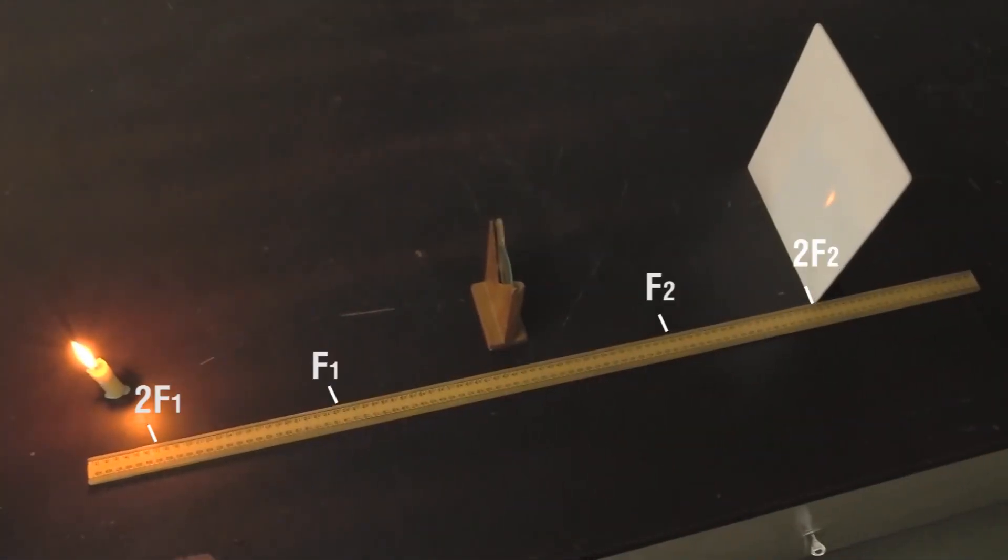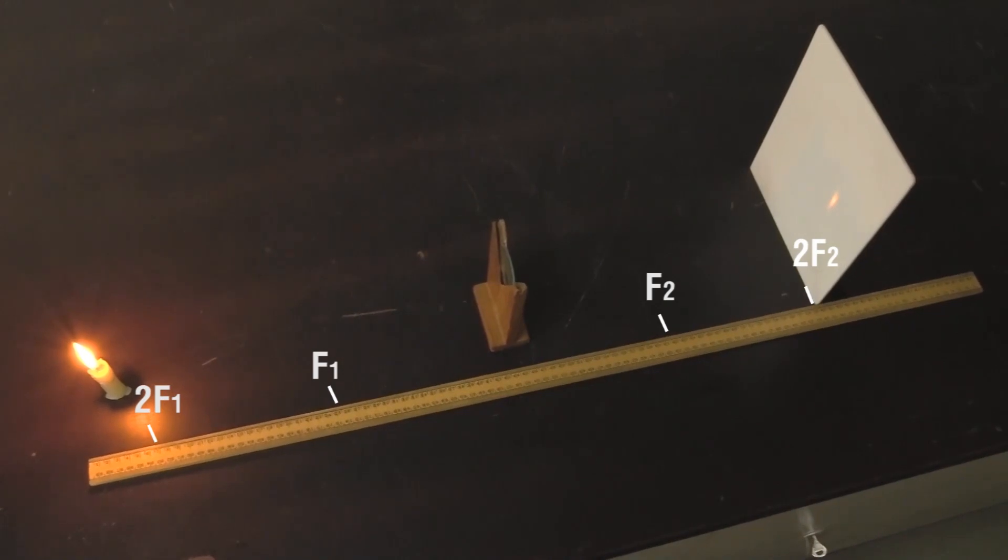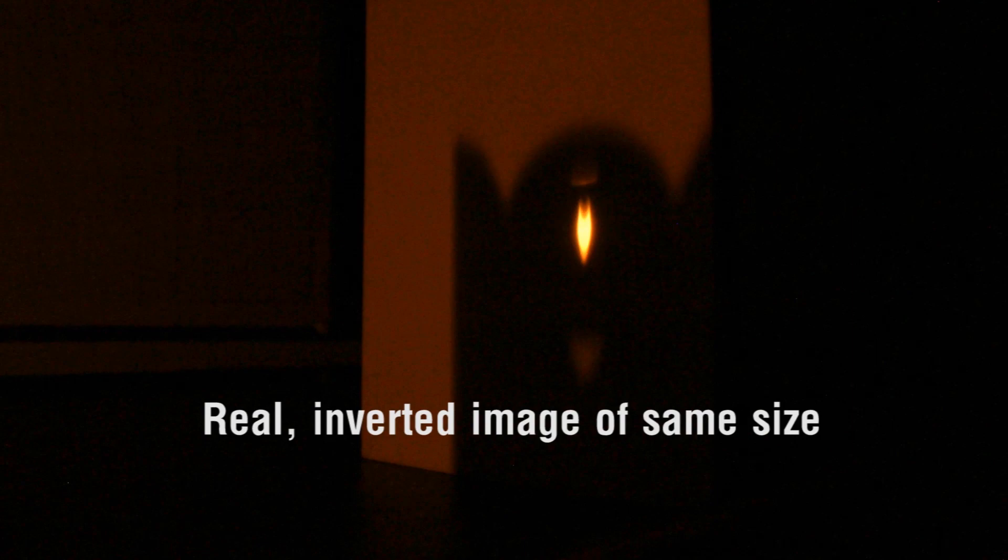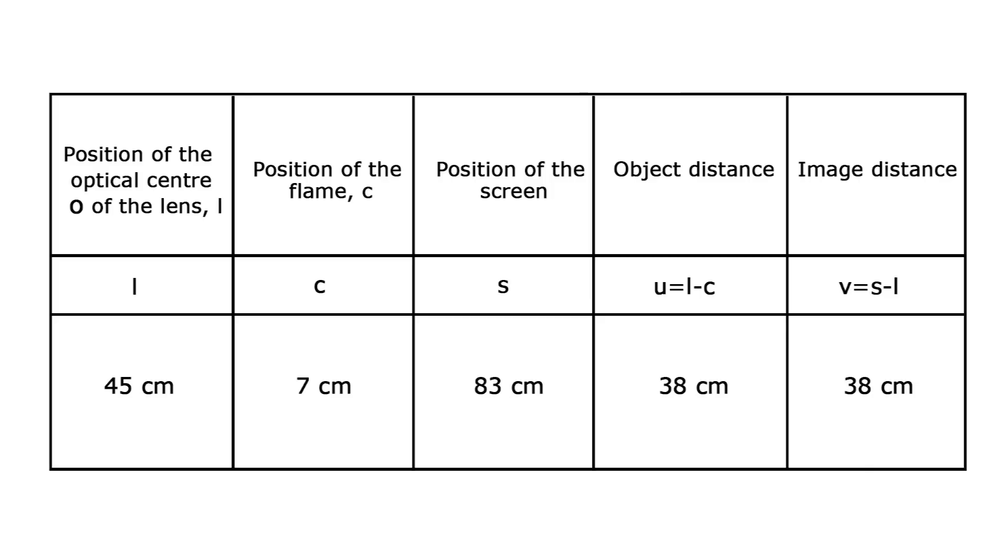Notice that the image will be formed at 2F2. The image formed is real, inverted, and of the same size as that of the object. Record the observations in a table.